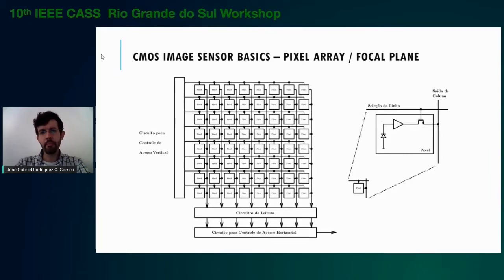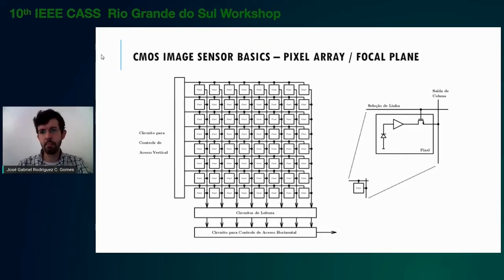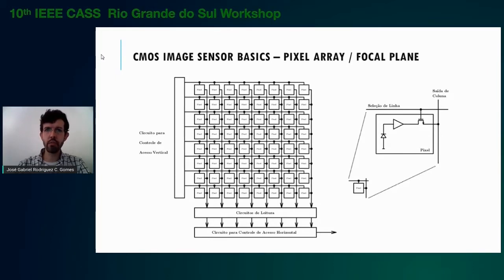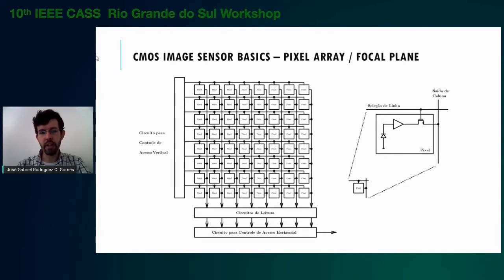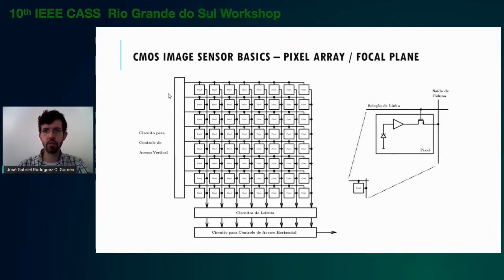This is a typical pixel array. For a 3T pixel, the row-select transistor is activated by a row-select control signal set by a vertical axis control circuit on the left of the figure. When the row-select transistor is on, the amplified sample becomes available for readout at the bottom of the pixel array. The readout circuits are controlled by horizontal axis control circuits.